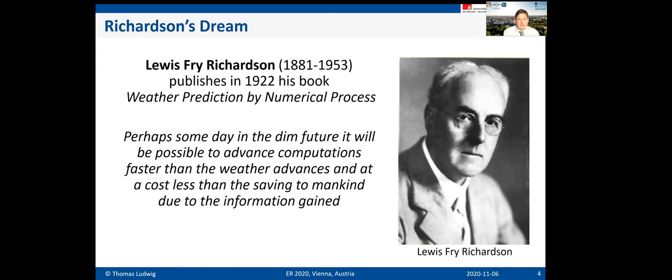I'll start with Lewis Fry Richardson, an early meteorologist and physicist who published in 1922 a book titled 'Weather Prediction by Numerical Process.' He described the physical laws governing how weather develops. There is a favorite citation of mine where Richardson says: 'Perhaps someday in the dim future it will be possible to advance computations faster than the weather advances, and at a cost less than the saving to mankind due to the information gained.'